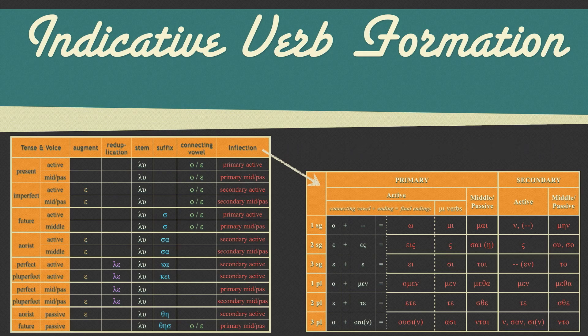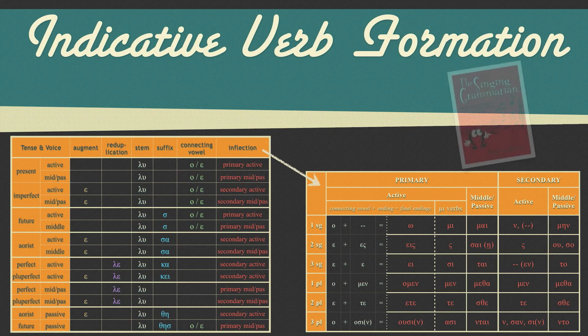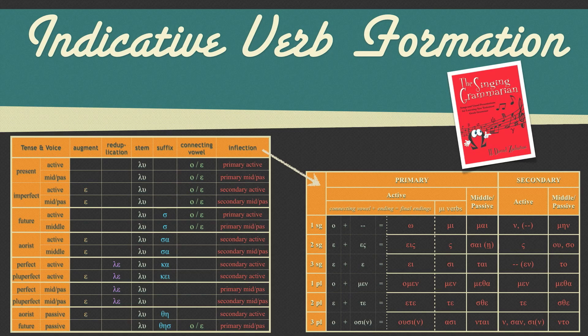I highly encourage you to memorize the indicative slot machine, as well as the primary and secondary endings. But don't forget, this is about formation. In the stripped down approach, you aren't worrying about parsing on sight and replicating tables from memory. Tooting my own horn again, I would encourage you to sing along to and memorize the various verb songs found in my singing grammarian package, available as a digital download through Kregel Academic. This will help familiarize you and even help you to memorize the slot machine and verb endings.